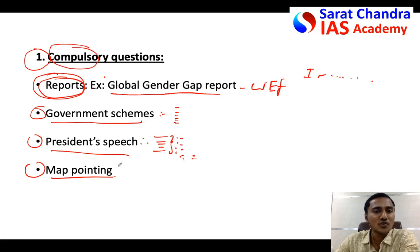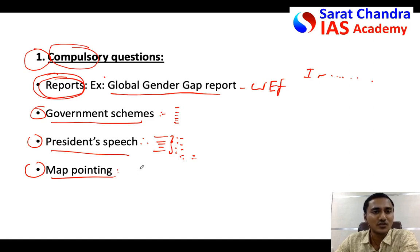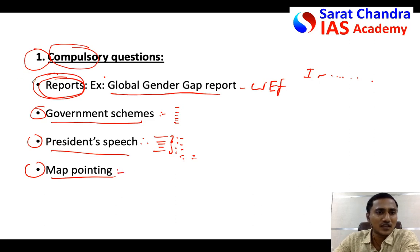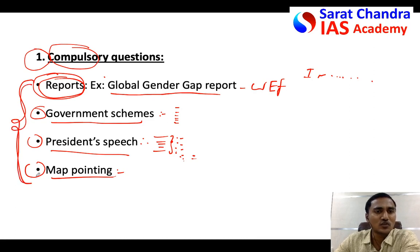Then, map pointing — every year two to three questions come on map pointing as well. Many institutes have published around 300 important map points; quickly go through them. Otherwise, you can go through map pointing videos — either from Unacademy or any other institute — because these are actually compulsory questions. Easily, from all these things, you will get around 10 to 12 questions.